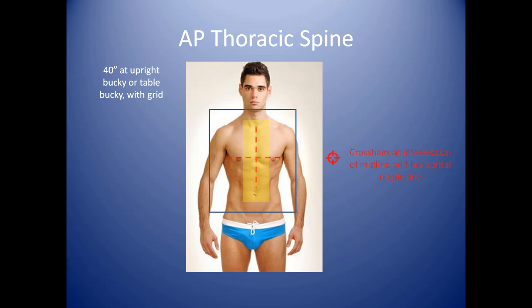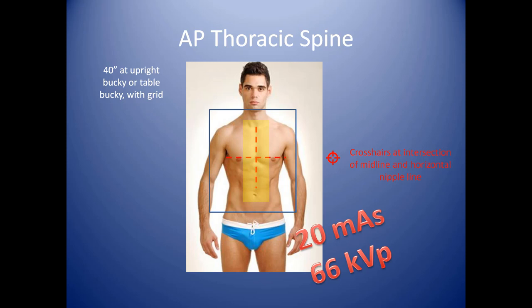Your crosshairs are centered right at a virtual intersection of the midline — where the sternum is, the bony portion right between your pecs — and the belly button is the central line there. The crosshairs horizontally are at the nipple line. That intersection is where we're going to center. A good starting technique for this examination is 20 mAs at 66 kVp.